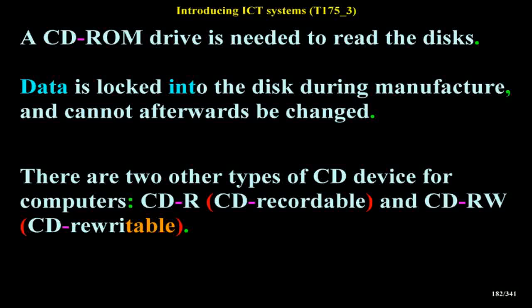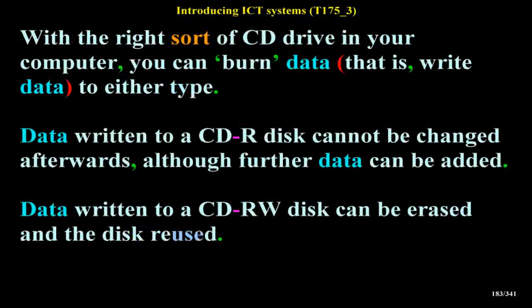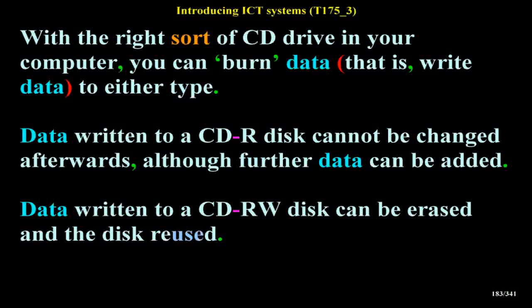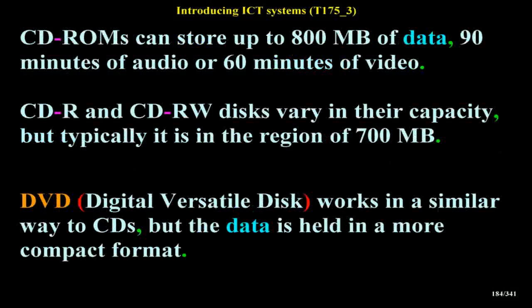There are two other types of CD device for computers: CD-R (CD recordable) and CD-RW (CD rewritable). With the right sort of CD drive, you can burn data — that is, write data — to either type. Data written to a CD-R disk cannot be changed afterwards, although further data can be added. Data written to a CD-RW disk can be erased and the disk reused. CD-ROMs can store up to 800 megabytes of data, 90 minutes of audio or 60 minutes of video. CD-R and CD-RW disks typically hold around 700 megabytes.